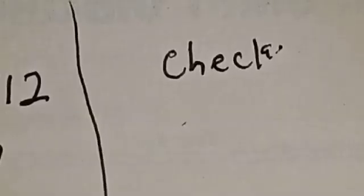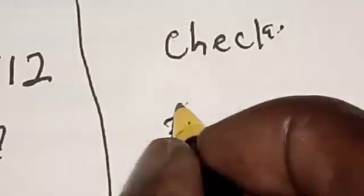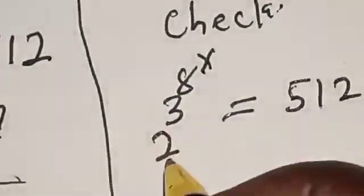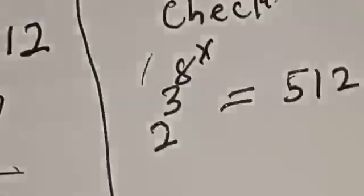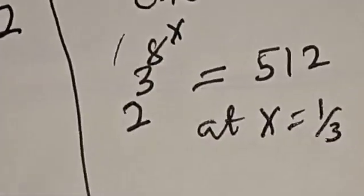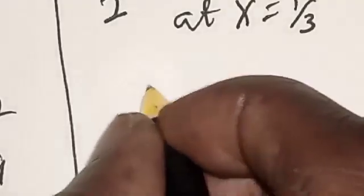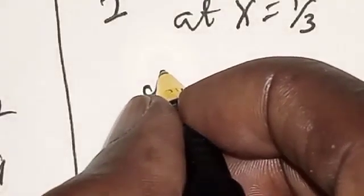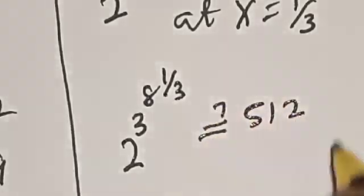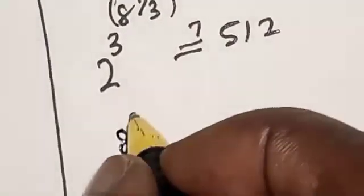Let's check. We have the given equation: 2 raised to power 3 raised to power 8 raised to power x is equal to 512. At x equal to 1 over 3, we have 2 raised to power 3 raised to power 8 raised to power 1 over 3 must be equal to 512. Let's work with the exponent first: 8 raised to power 1 over 3.